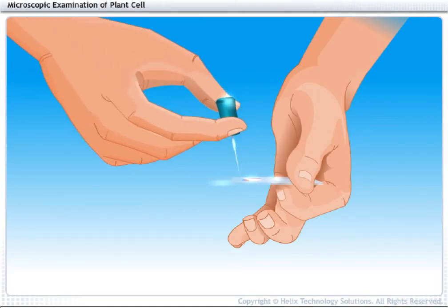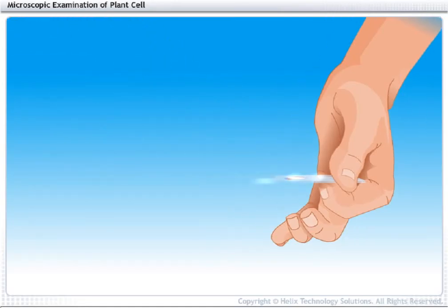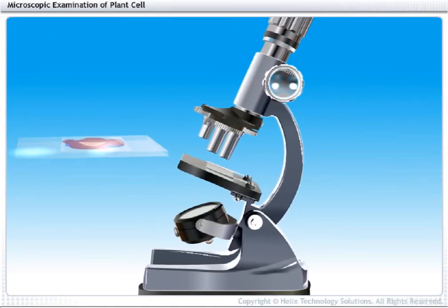Tap gently with a needle on the cover slip to remove air bubbles. Place the slide on the stage of the microscope.